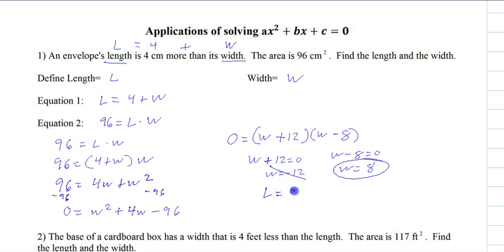So length equals 4 plus W, which is 4 plus 8, which is 12. So that means we have a length of 12 centimeters and a width of 8 centimeters. And then we still have to check it to make sure it fits everything.